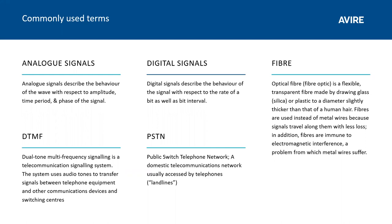Fiber — we're talking about optical fiber, or fiber optic. This is a flexible, transparent fiber made from drawing glass or plastic, typically the diameter of slightly thicker than a human hair. It's used instead of metal wires because signals can travel much further without any loss, and fiber is less susceptible to electromagnetic interference, which is a common problem with signals carried over metal wires.